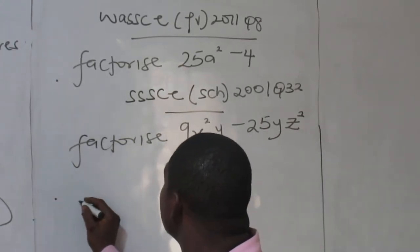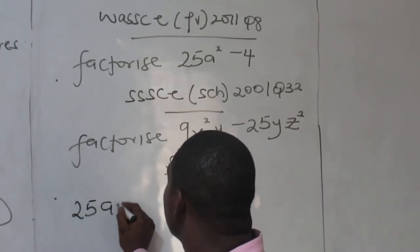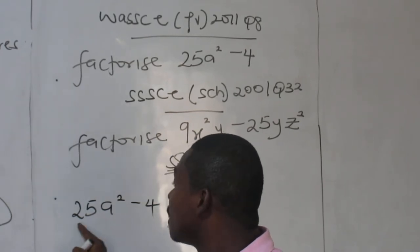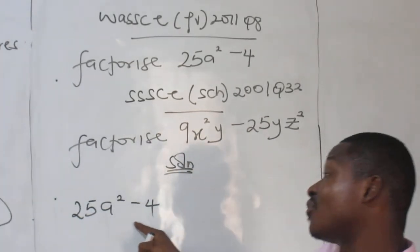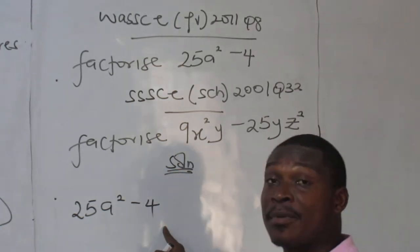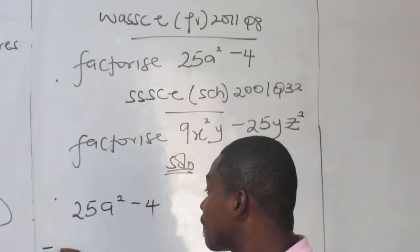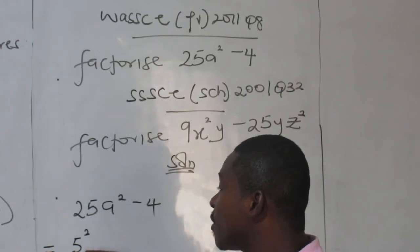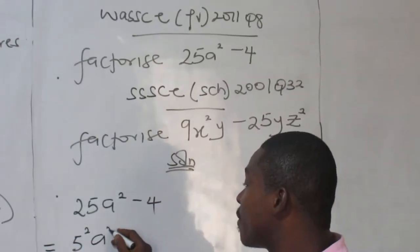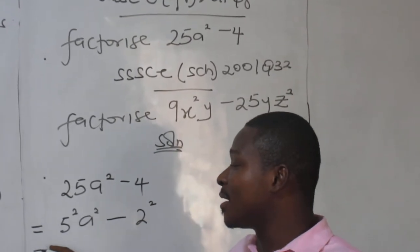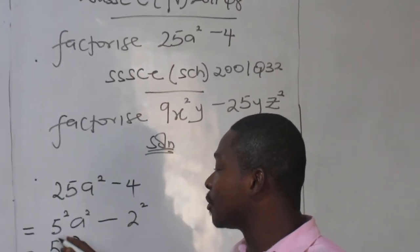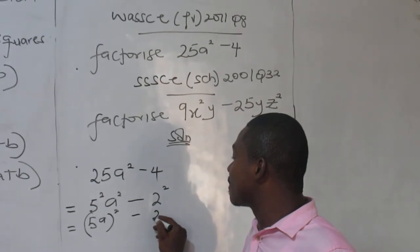Let's try the first one. 25a squared minus 4. Now, this does not really look like a difference of two squares. And there's a difference of two squares in disguise. We have to open up here. So let's check. 5a squared will still give me 25. a squared remains so. Now, that is 2 squared. It is now becoming visible.